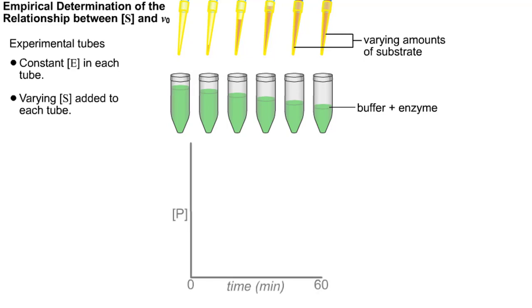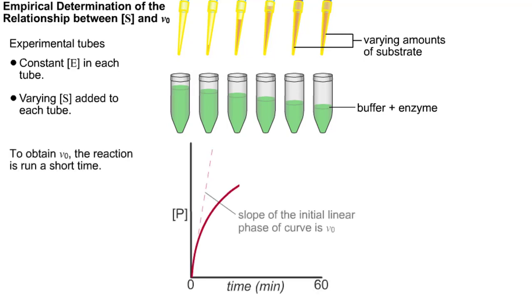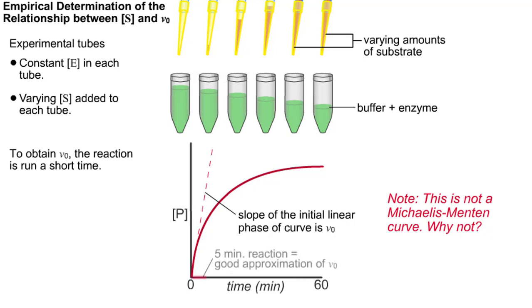In order to measure the initial velocity, the reaction is only run for a short length of time. This is done so that only a small percentage of substrate is converted into product, and therefore there will be no kinetic contribution from the reverse reaction of product formation, and K-2 can still be ignored.